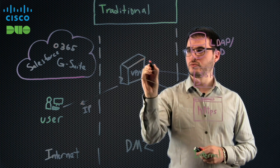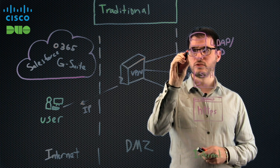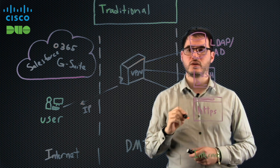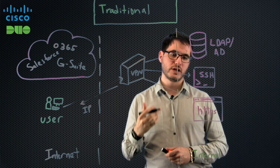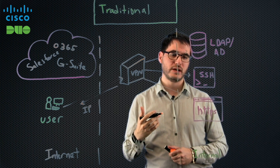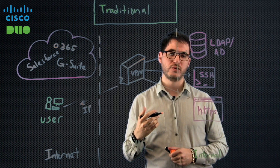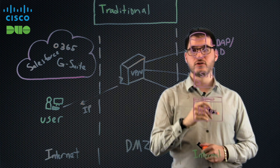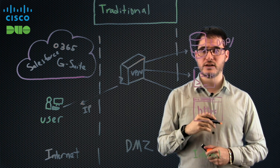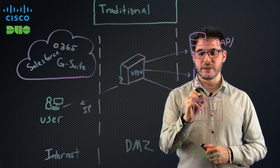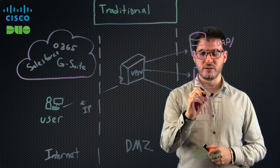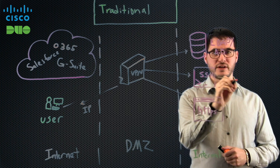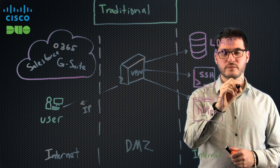And they can go, really, wherever they want. Additionally, one of the challenges with VPN from a security point of view is, say I've logged into this SSH server — I can now use that to pivot to other places in the network.